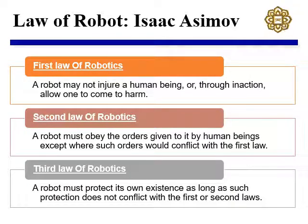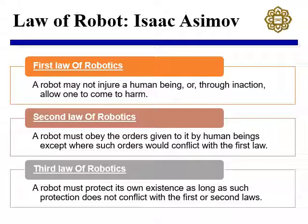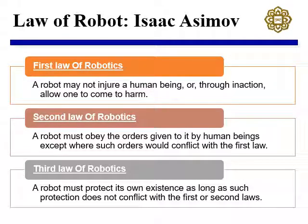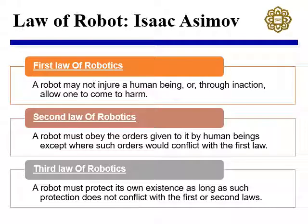Before we conclude, let's share the famous robot laws. When designing or programming any robot, Isaac Asimov — a famous science fiction writer — mentioned three laws in one of his books. These are guidelines for programming robots so they can operate safely. The first law states that a robot may not harm any human being through its actions.